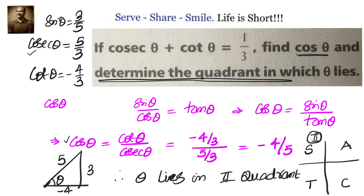To recap: whenever given cosecant theta plus cot theta or secant theta plus tan theta, leverage the identity cosecant squared theta minus cot squared theta equals 1. If cosecant theta plus cot theta is 1 by 3, then cosecant theta minus cot theta is 3. Adding and simplifying gives cosecant theta equals 5 by 3, so sin theta is 3 by 5. Substituting gives cot theta as negative, and cos theta equals cot theta by cosecant theta equals minus 4 by 5. Since cos is negative and sin is positive, theta lies in the second quadrant.